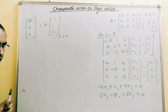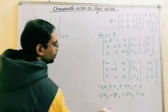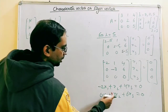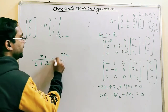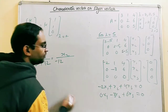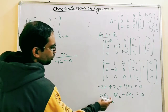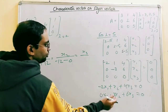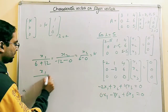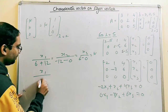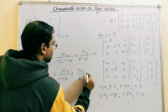Applying the cross-product method for lambda equals 5: X1 / (1×6 - (-3)×4) = X1 / (6+12) = X1/18. X2 / (-2×6 - 0×4) = X2/(-12). X3 / (-2×(-3) - 0×1) = X3/6. So X1/18 = X2/(-12) = X3/6 = K.